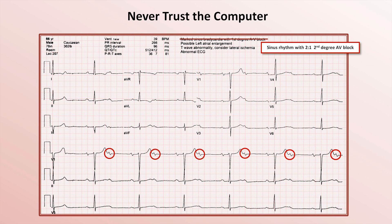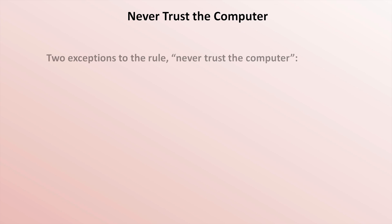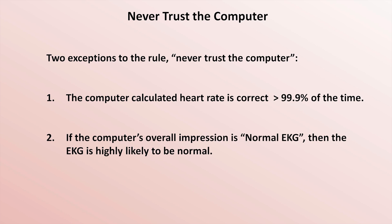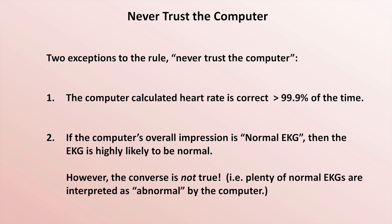The computer usually gets it right, but usually is not good enough. There are two exceptions to this rule. First, the computer-calculated heart rate is correct more than 99.9% of the time — the only exceptions being excessive artifact or when prominent T-waves are mistaken for QRS complexes. Second, if the computer's overall impression is 'normal EKG,' then the EKG is highly likely to be normal. The converse is not true: there are plenty of normal EKGs interpreted as abnormal, such as a junctional rhythm when it's really sinus with unusually small P-waves, or ST/T-wave abnormalities actually within normal range.